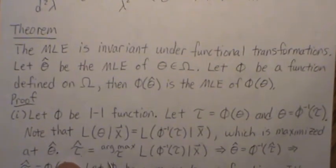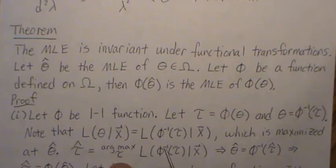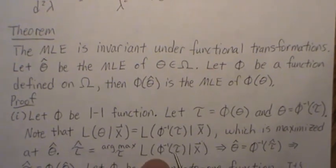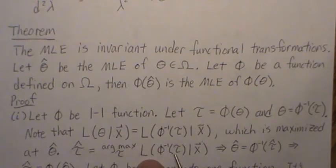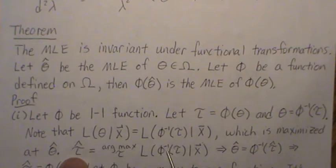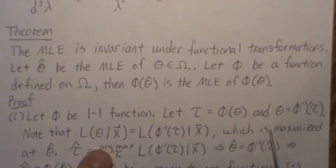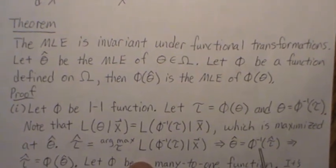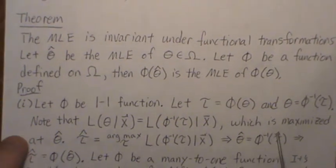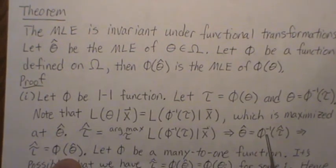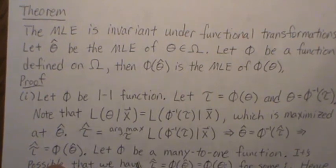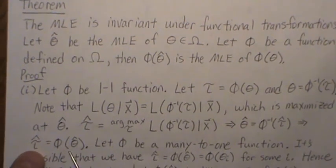Since phi is one-to-one, maximizing the likelihood in terms of tau versus the one-to-one function of tau gives the same value. The maximum occurs when the argument equals theta hat. Taking phi of both sides gives tau hat equals phi of theta hat, confirming that phi of theta hat is the maximum likelihood estimator of tau. So the theorem holds for one-to-one functions.